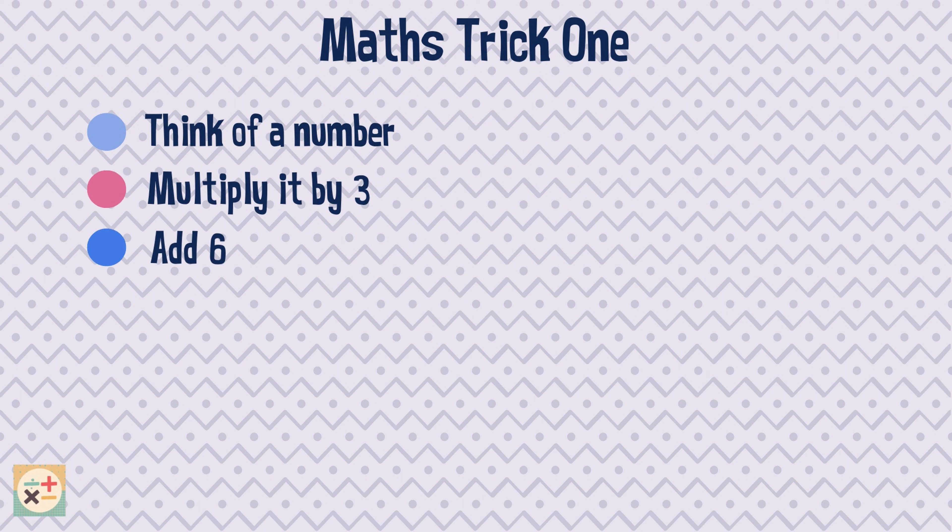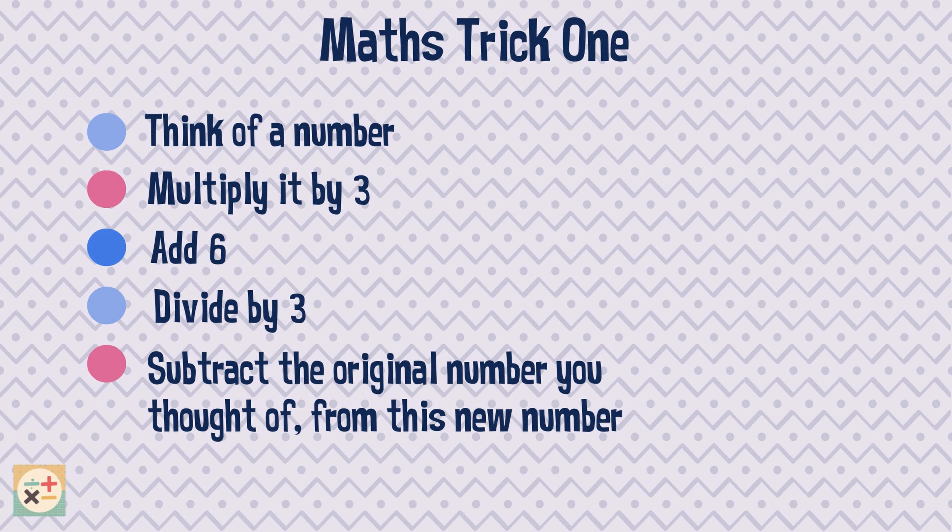Add six. Divide by three. Subtract the original number you thought of from this new number. The answer is two.